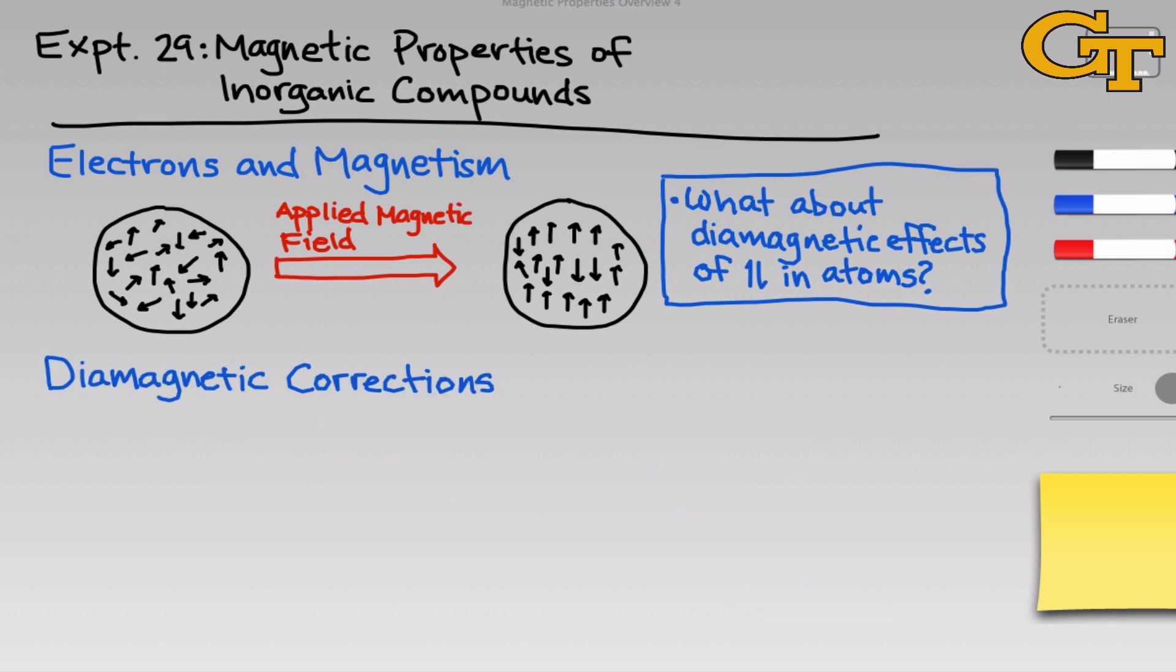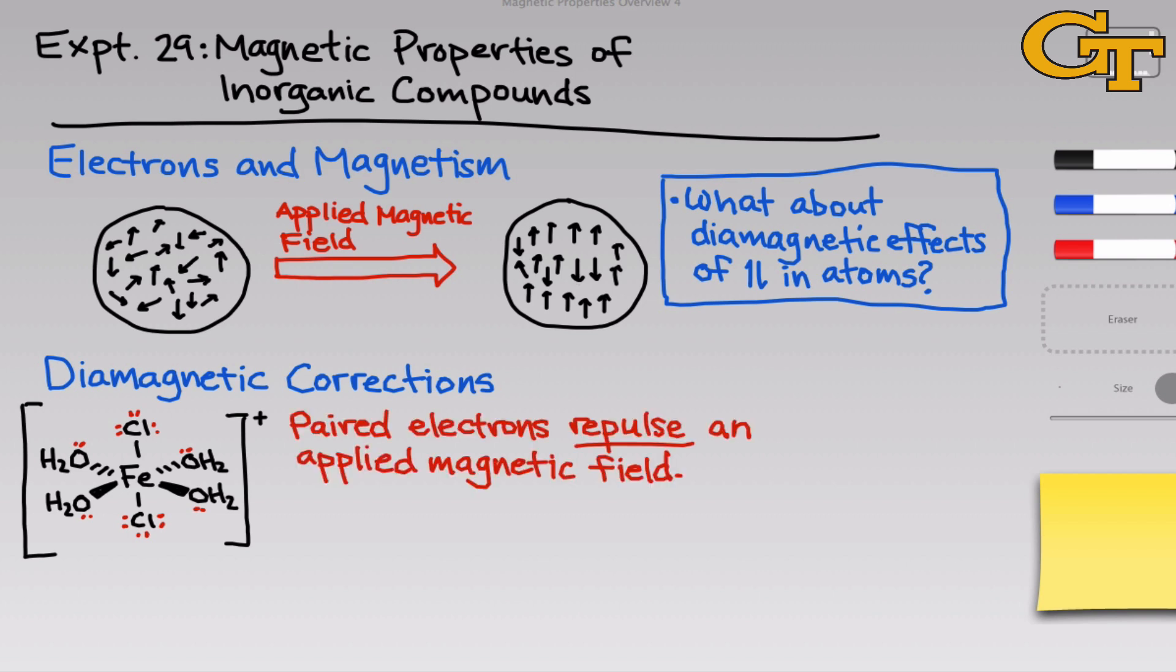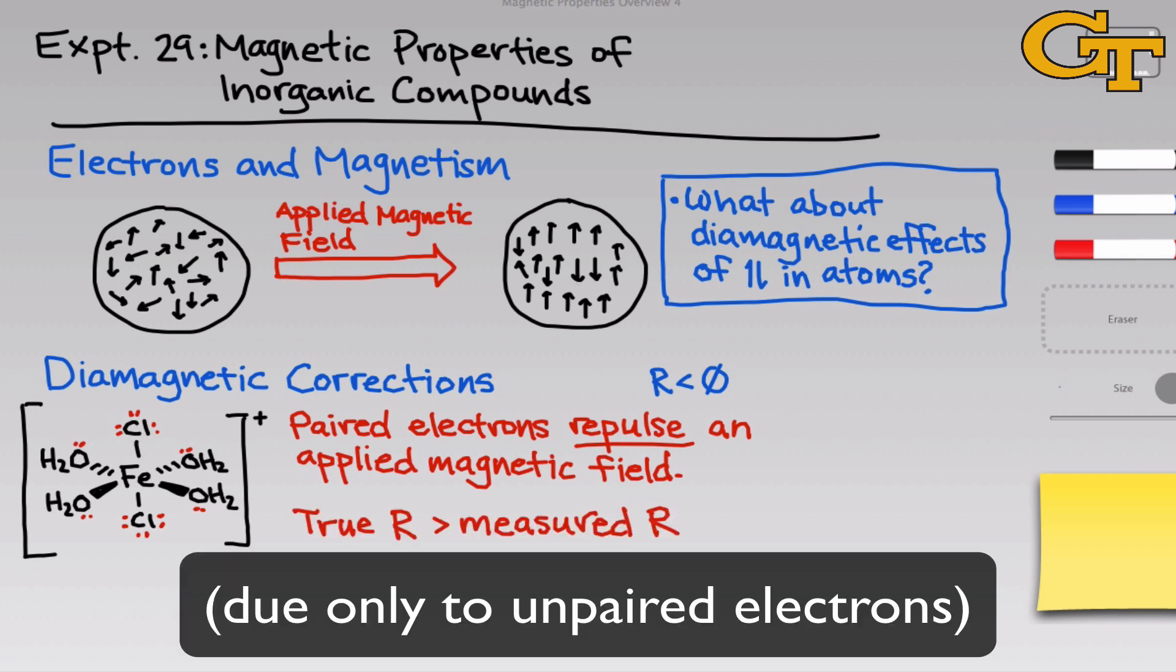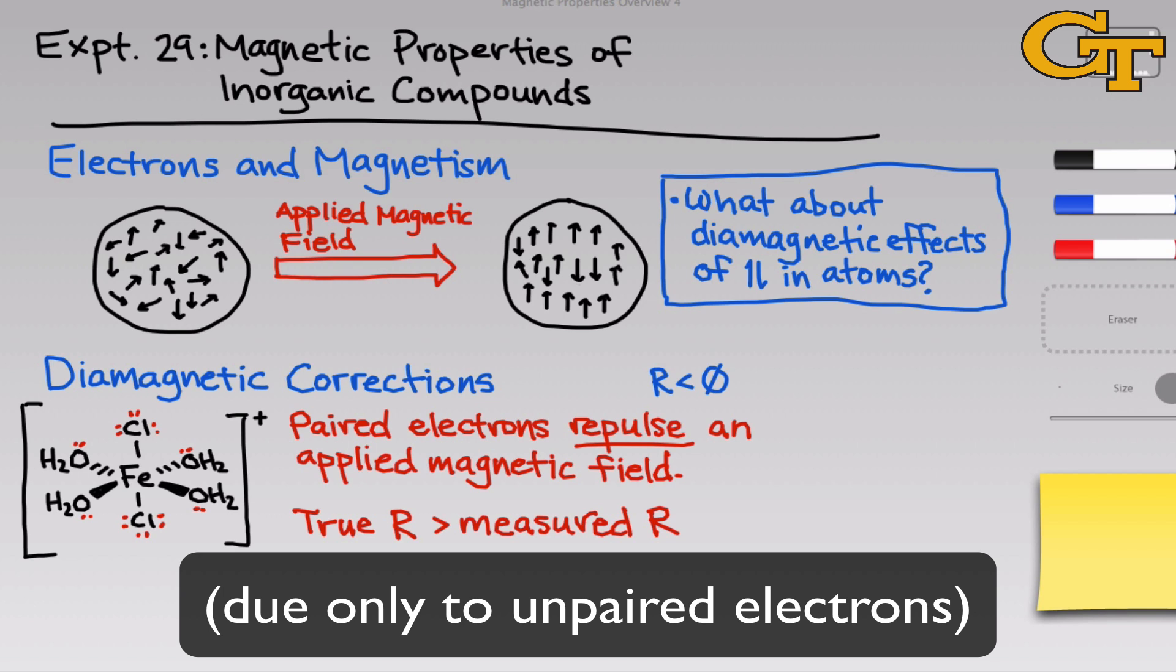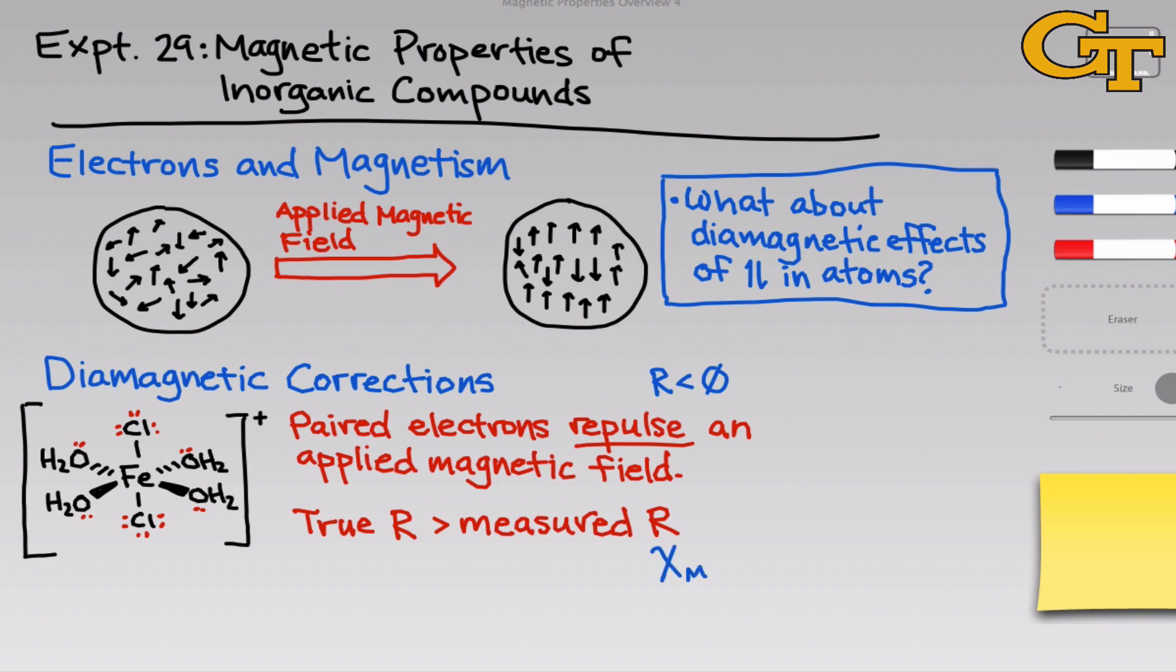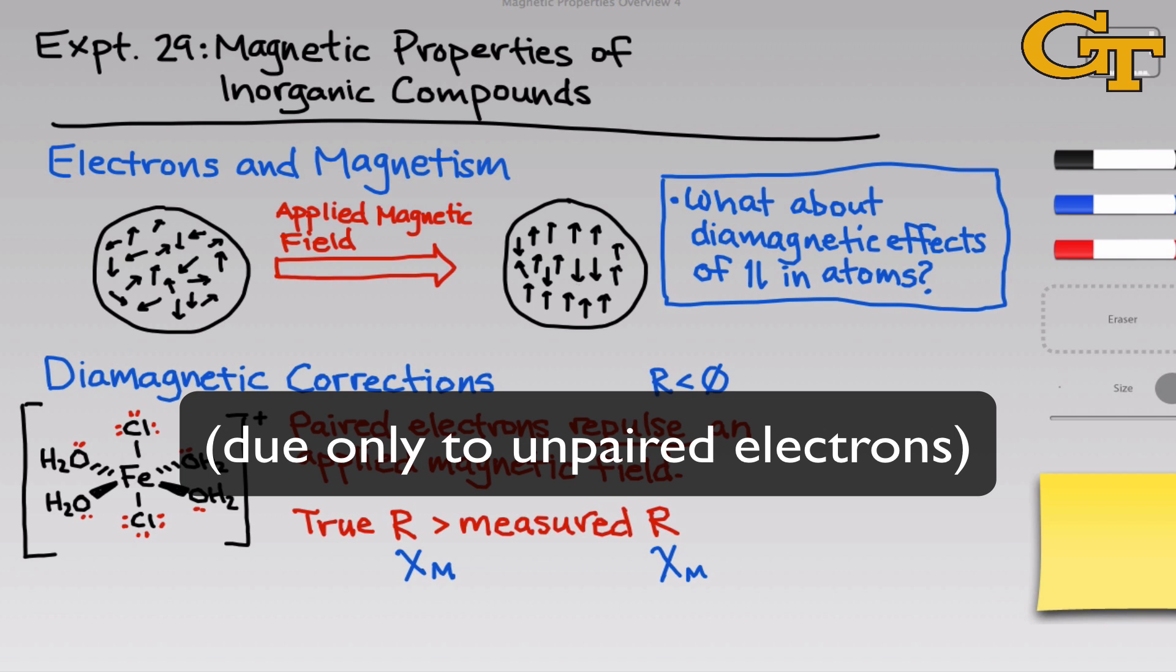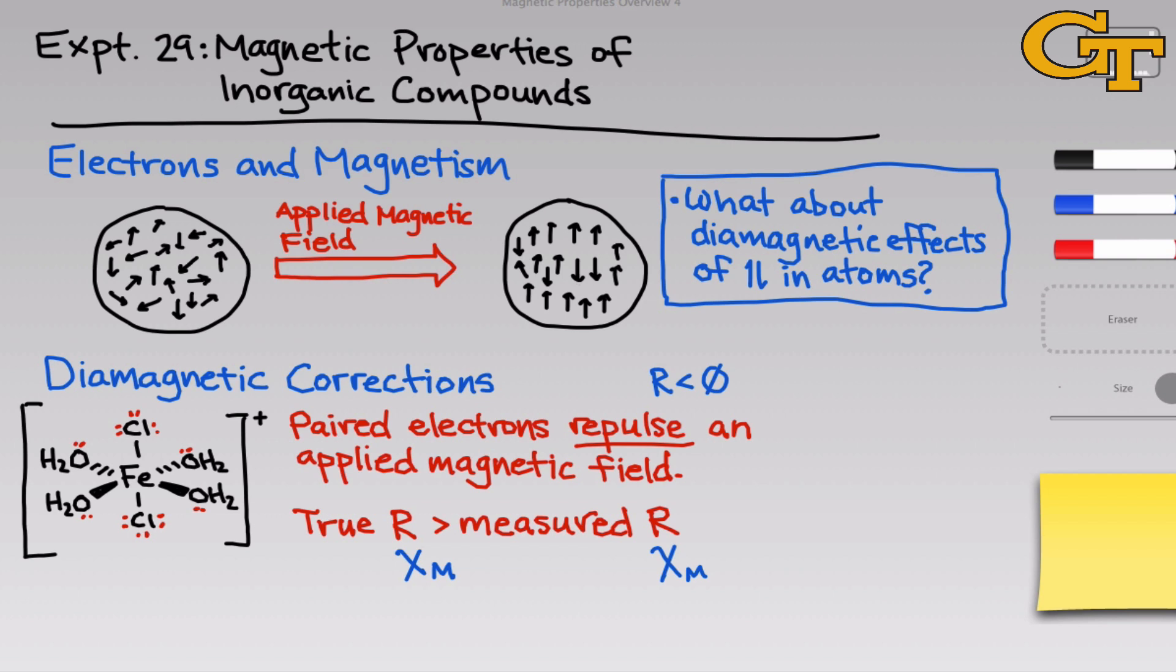We've seen that we need to correct for the diamagnetic nature of electron pairs. I'm going to go back to this example of the iron complex. The basic idea is that paired electrons repulse an applied magnetic field, and this repulsion counterbalances the attraction brought on by the paramagnetism of any unpaired electrons. Experimentally, these repulsions contribute negatively to the reading, so the true reading in the absence of these diamagnetic effects would be greater than the one we actually measure. The true magnetic susceptibility is greater than the measured molar magnetic susceptibility.